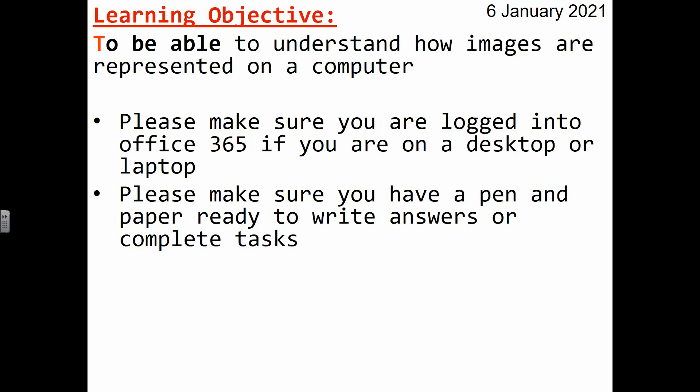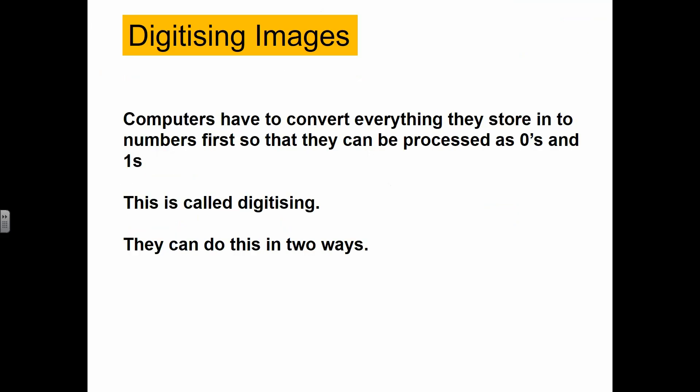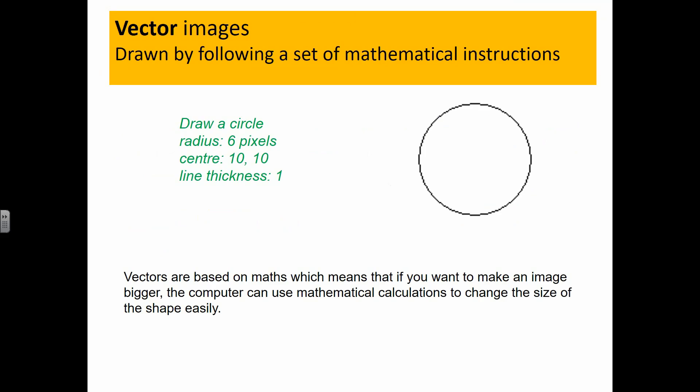We're going to look at how images are represented on a computer. We've done binary, denary, and ASCII, so we know how letters are done. Now we're moving on to images. Computers have to digitize an image in one of two ways because they can only see ones and zeros. Either a vector image, which works out the position of any color on screen using math coordinates so you can make something bigger or smaller without ruining the quality, or a bitmap image, which we're looking at today.